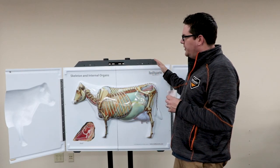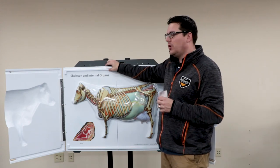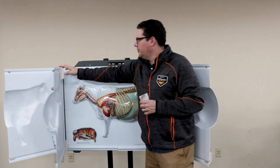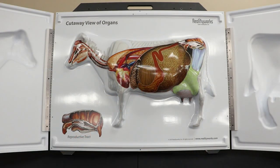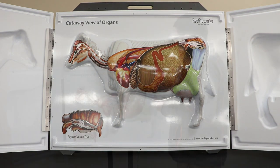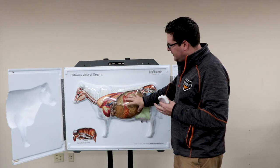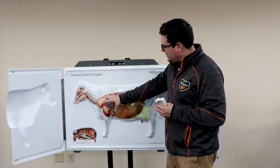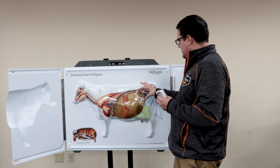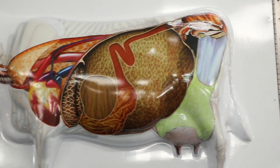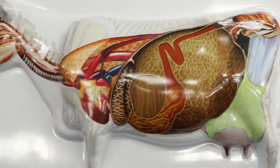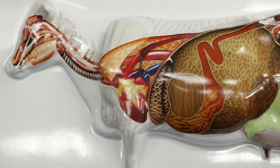You can then flip one more time, and when I flip it open we have the cutaway view of the organs. Now we're able to see inside the stomach, seeing the different parts, seeing the reproductive system, seeing the udder, and really seeing how it all works together.